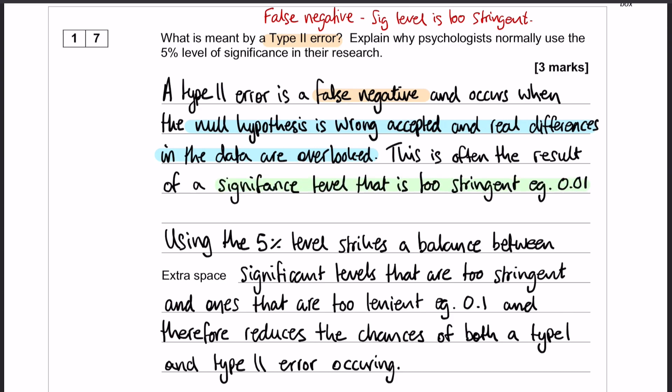The reason psychologists generally use 5% rather than 1% when it comes to significance levels is because it strikes a balance between levels that are too stringent and ones that are too lenient, for example 10% or 0.1.